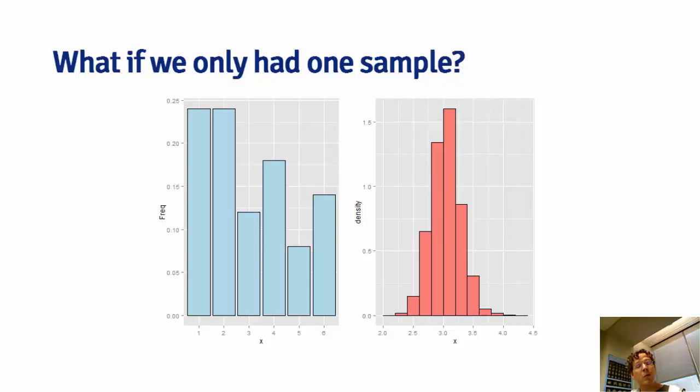We simulate from that population distribution to figure out the distribution of a statistic that we're interested in. And that's the basic idea. So we'll go through some examples now with less contrived settings than this die roll example.